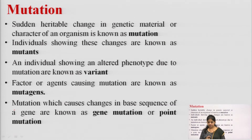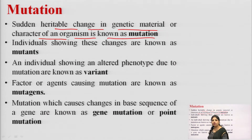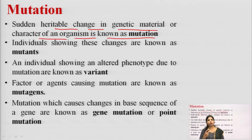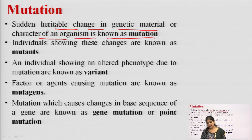What is mutation? Sudden heritable changes in the genetic material or the character of an organism is known as mutation. Generally, what are genetic materials present in our plants or human cells? If there are heritable changes in those genetic materials, then changes occur in phenotypic characteristics and genotypic characteristics.